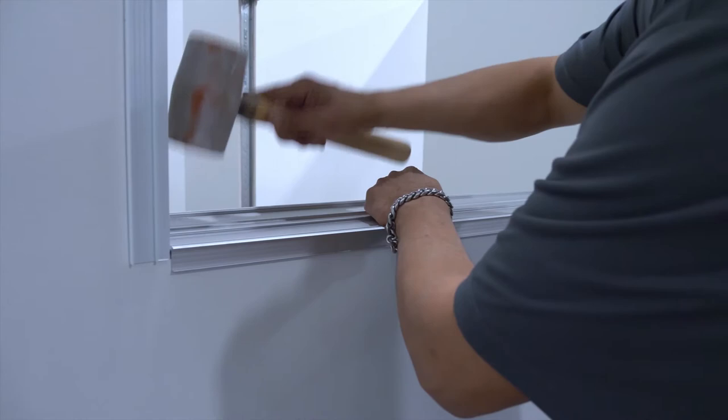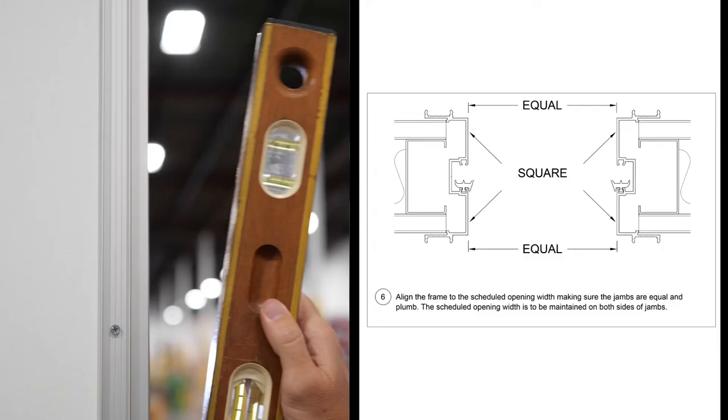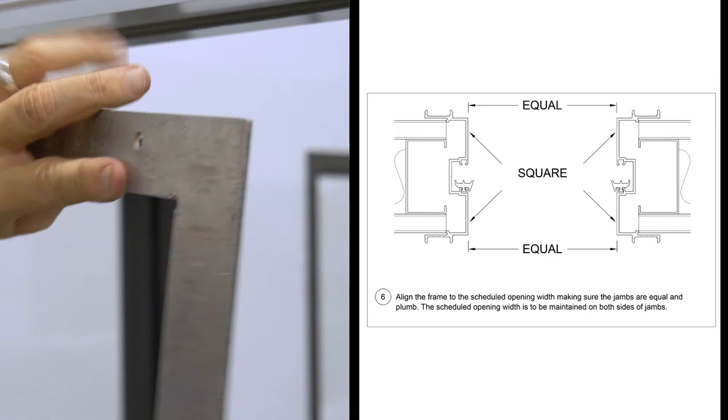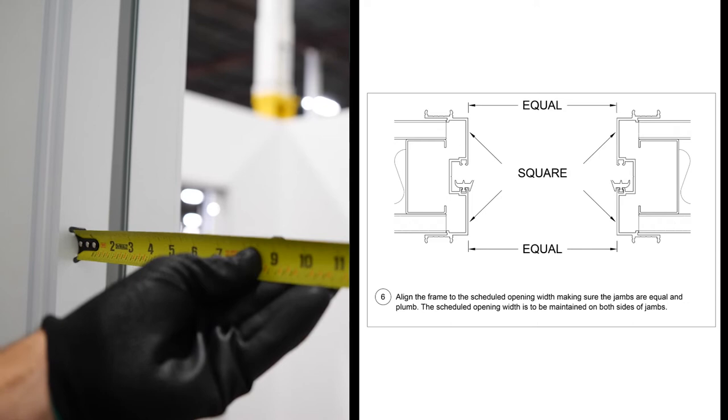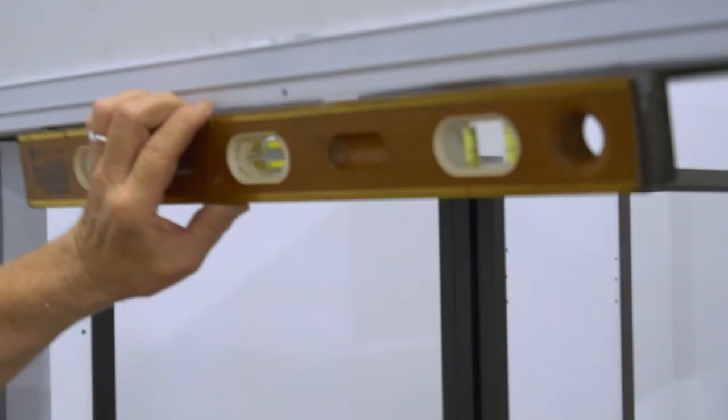Slip the glass base over the drywall. Align the frame to the scheduled opening width, making sure the jams are equal and plumb. The scheduled opening width is to be maintained on both sides of the jams. Level the header and glass base.